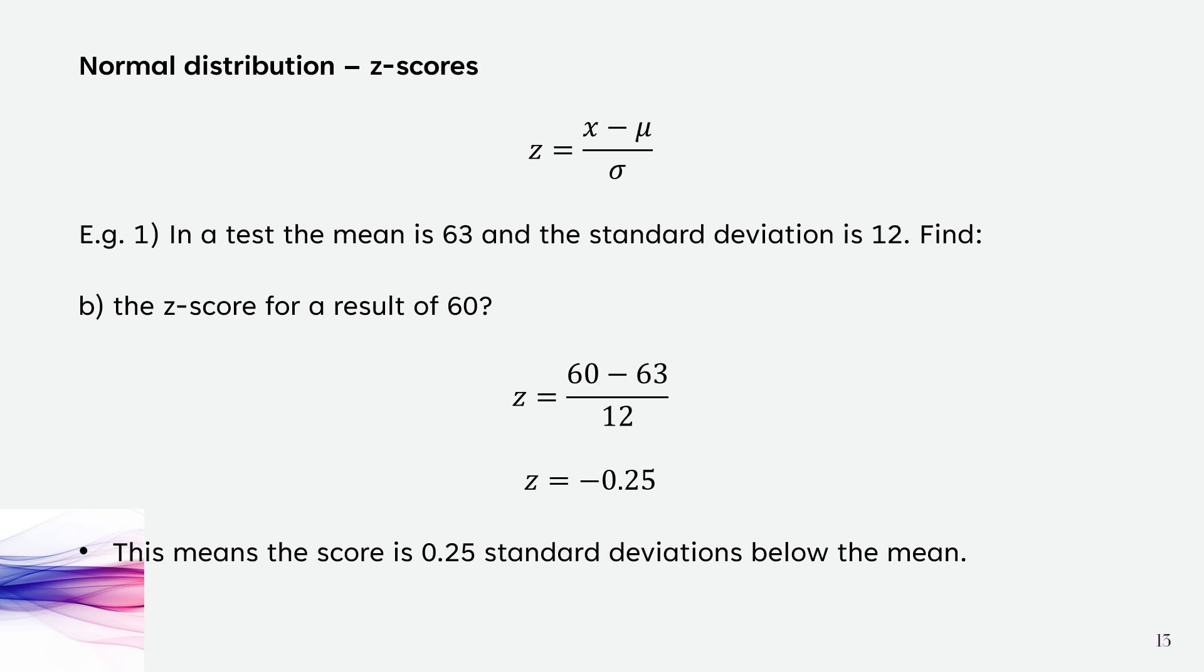Sometimes in exams they'll ask you to explain what that stands for. That means that the score of 60 is 0.25 standard deviations below the mean, because it's negative.